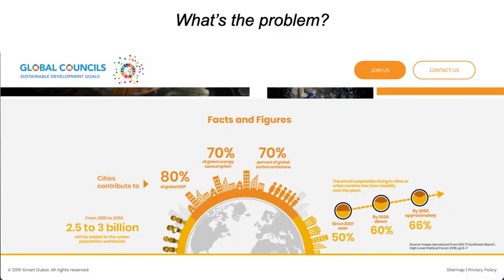What's the problem? Cities consume 70% of the world's primary energy and emit 70% of the greenhouse gases to the atmosphere. We could say they are the number one responsible for global warming. Cities are also the place of heartbreaking inequalities and socio-economic conflict.